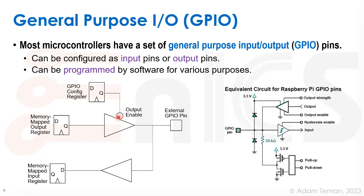There's also a GPIO config register. Writing a zero to it turns on the output buffer, pushing whatever is stored in the flip-flop to the external pin. Writing a one turns off the output buffer, creating a high-Z state, and whatever external voltage is on the pin gets driven through an input buffer — level-shifted down to digital voltage — and sampled at the input register, which is also memory-mapped. The Raspberry Pi equivalent also includes ESD protection diodes and pull-up/pull-down circuitry.